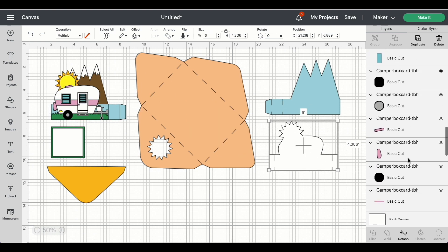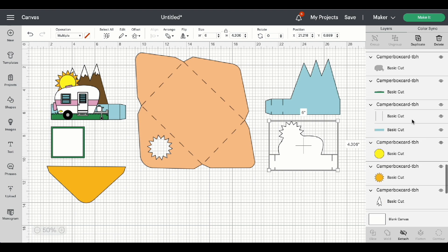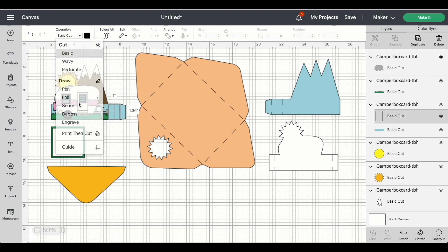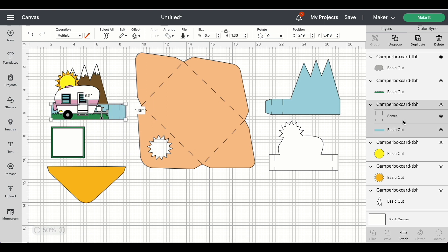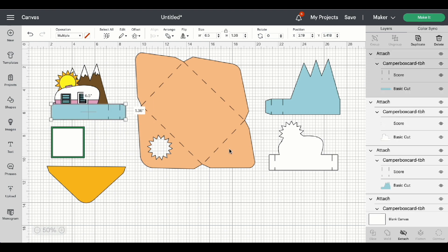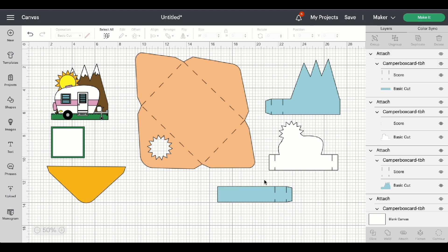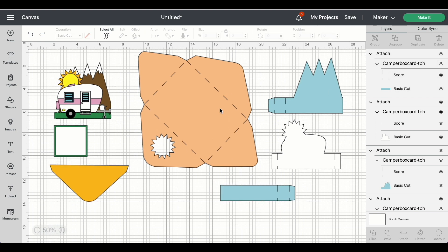And the last one. Highlight the scoreline, change that to score. Highlight the group, and attach. So altogether, the four pieces that we have that we need to convert scorelines for will be the envelope, the two blue pieces are the outside pieces for the box, and then the white piece is the inside piece. Once you've done that, you can go ahead and click Make it.